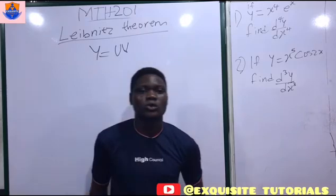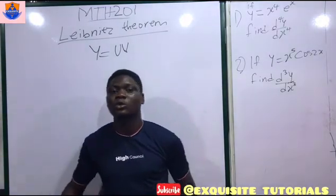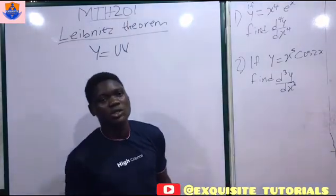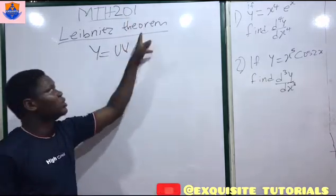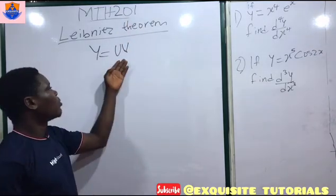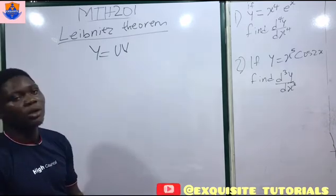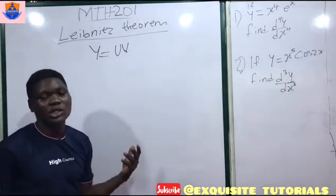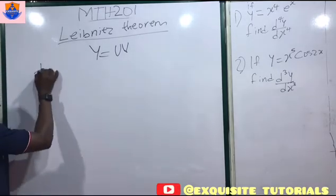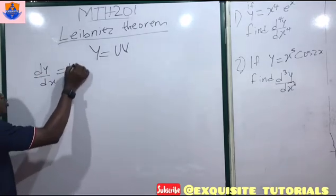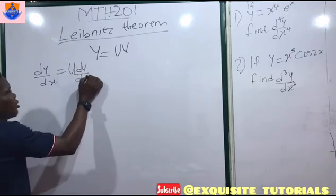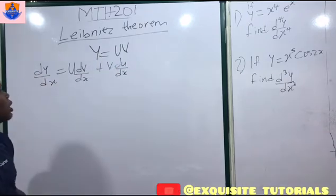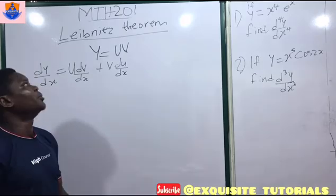Welcome back to SBC tutorials. In today's video we're going to look at Leibniz's theorem. This is MTH 201 for 200 level students in Delsu or any other school offering this course — it's on calculus. From O level and 100 level you must have seen something like y equals uv, and you're told to differentiate. This is basically just your product rule, where dy/dx equals u·(dv/dx) plus v·(du/dx).